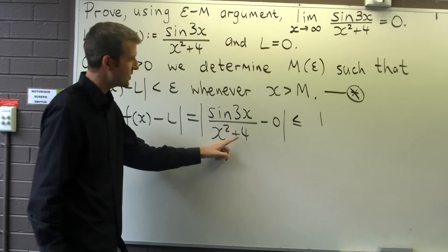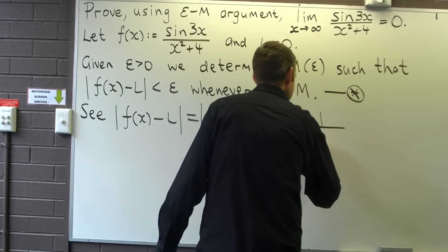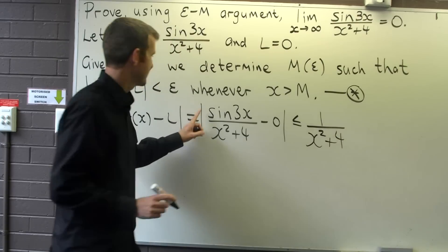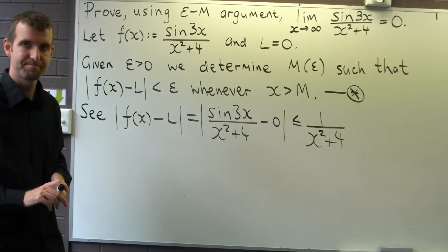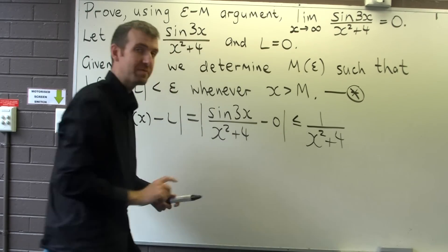Okay, and the bottom part, well x²+4 is always positive, so I can actually get rid of the absolute values here and make it a little bit simpler. So what can I do now? Well I can simplify this a little bit further.